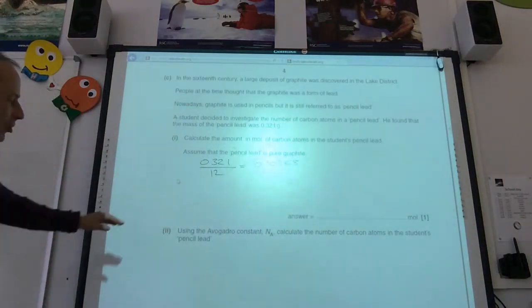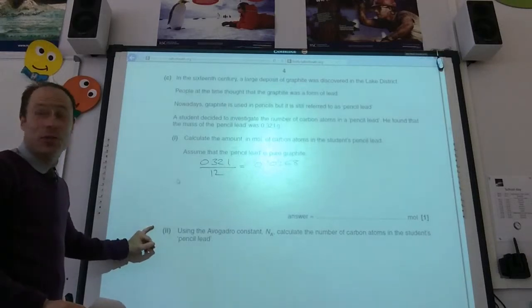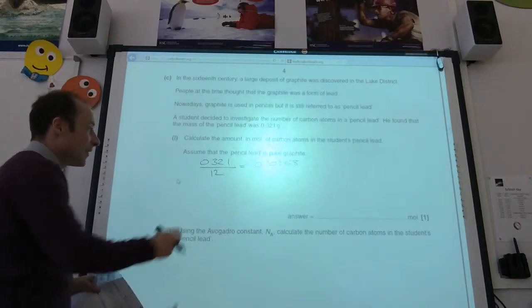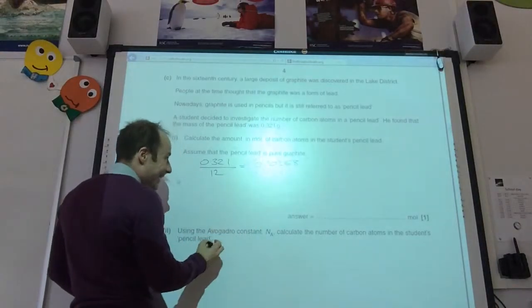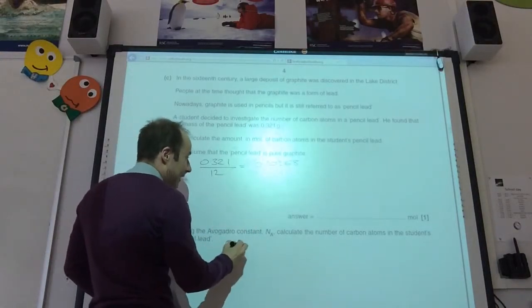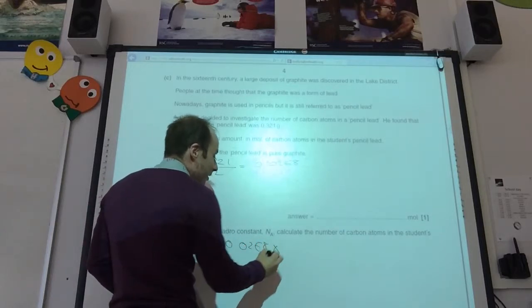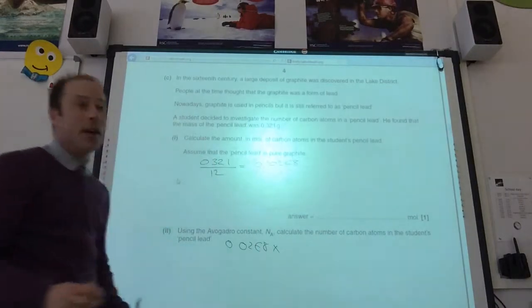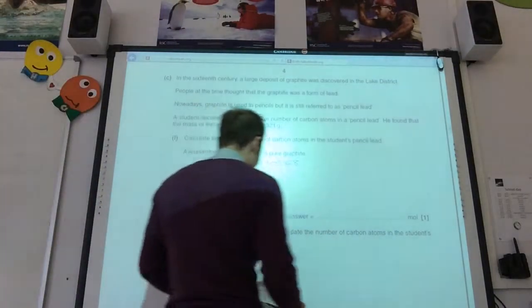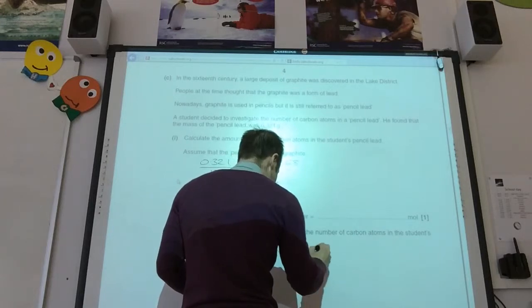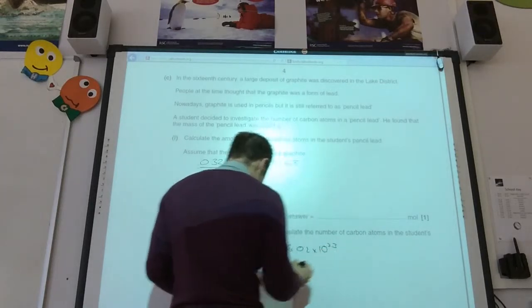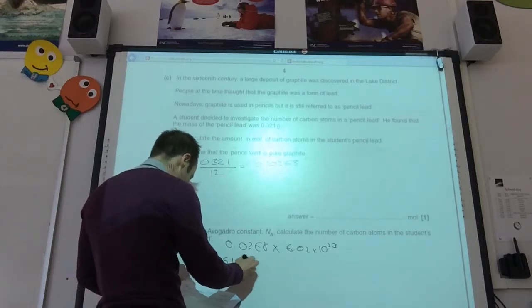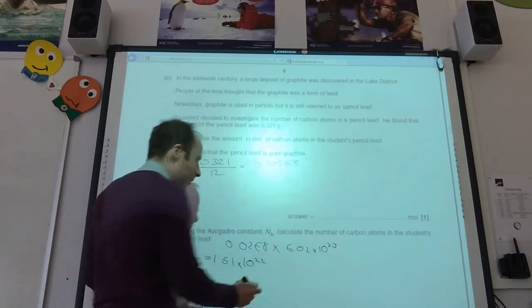Do you think that is an Avogadro's constant? Remember, that's always on your data sheets. Calculate the number of carbon atoms in there. Okay, so you've found the number of moles. It's dead easy to convert that into atoms. It's just going to be 0.0268 times by Avogadro's constant, which if you look it up on your data sheet, it's going to be 6.02 times 10 to the 23. And if you do that, you should get 1.61 times 10 to the 22 atoms.